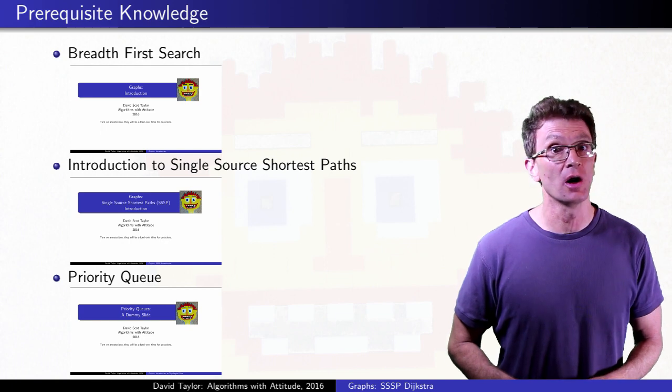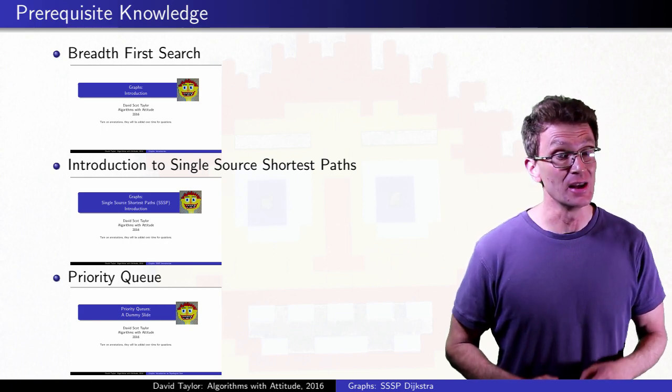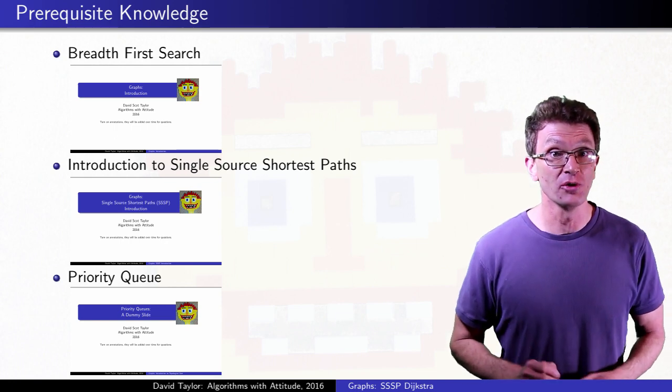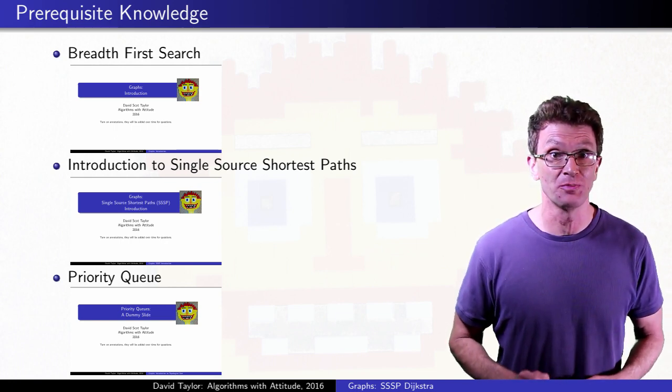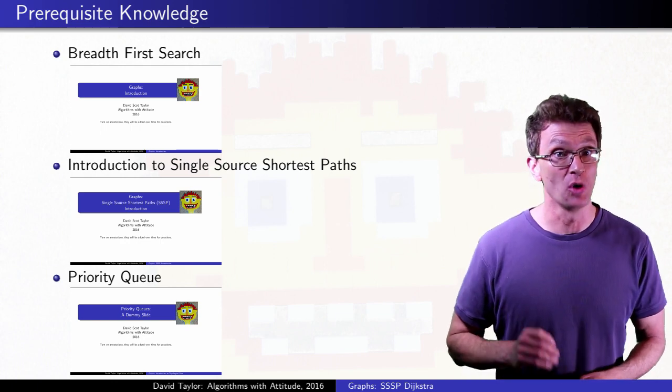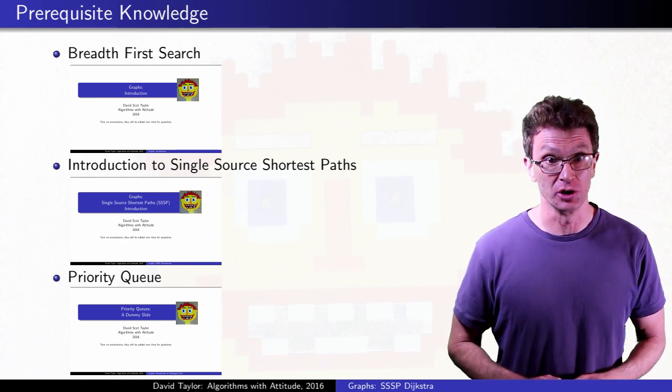Before starting this video, you should understand breadth-first search. The implementation of Dijkstra's algorithm is really similar. Also, the introduction to single source shortest paths video is critical, it's the first half of this video. You should also know what a priority queue is.